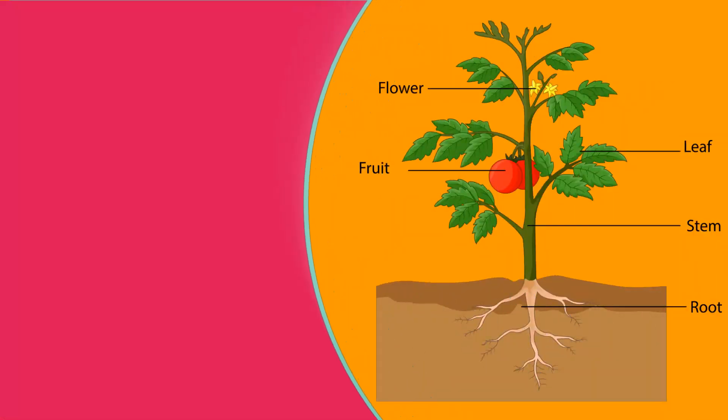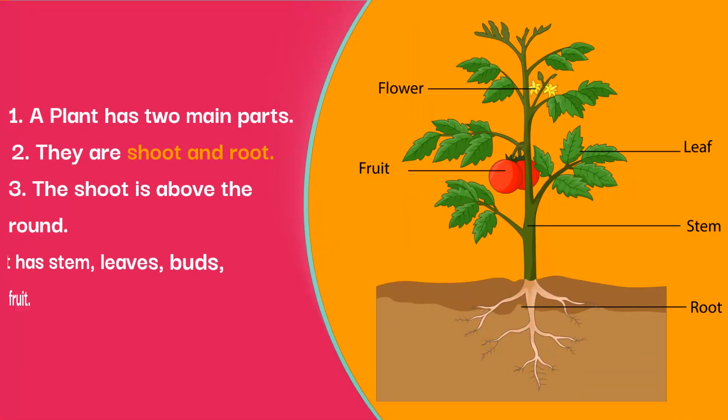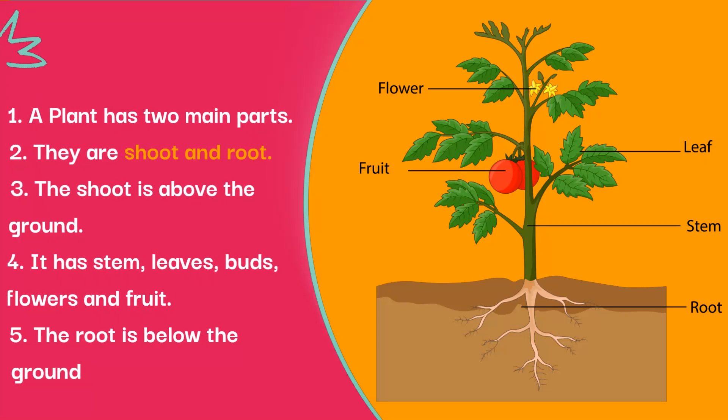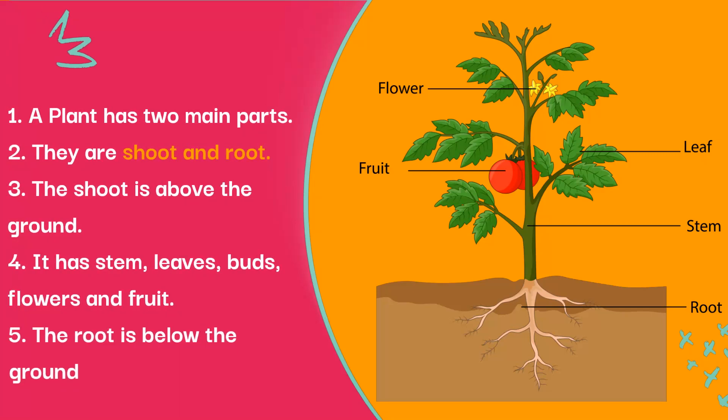A plant has two main parts. They are shoot and root. The shoot is above the ground. It has stem, leaves, buds, flowers and fruit. The root is below the ground.